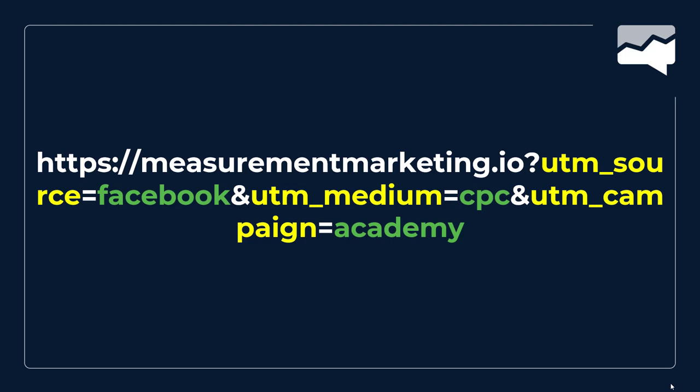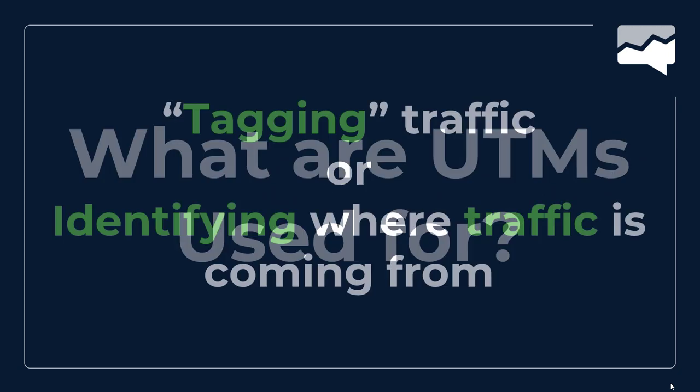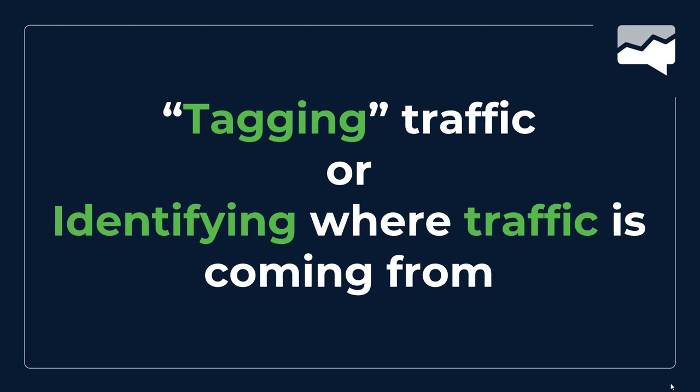What are UTMs used for? Very simply: tagging traffic — or identifying where traffic is coming from. Another way of saying that is understanding what's working and what's not. It's giving your system, whether Google Analytics or something else, a signal telling it where the traffic is coming from and what that traffic is supposed to be doing.